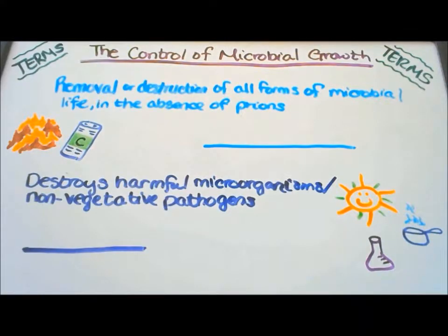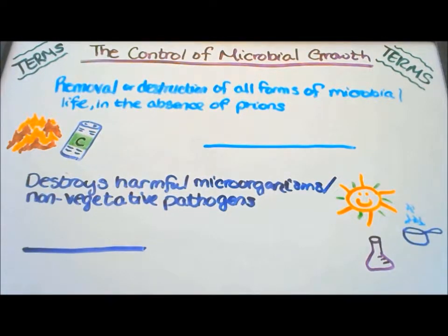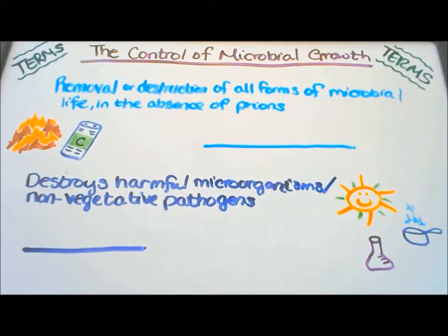This video will be about control of microbial growth. We're going to tackle terms and definitions. First definition: the removal or destruction of all forms of microbial life in the absence of prions. Our first term is sterilization.